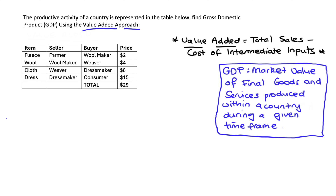Let's look at the table a little deeper. We're basically seeing a production process from start to end. We're starting with some fleece — the farmer has some fleece from a sheep, and the farmer sells the fleece to a wool maker for $2. The wool maker then makes some wool and sells it to a weaver for $4. The weaver makes some cloth from that wool and sells it to a dressmaker for $8. The dressmaker then makes a dress and sells it to the consumer for $15.